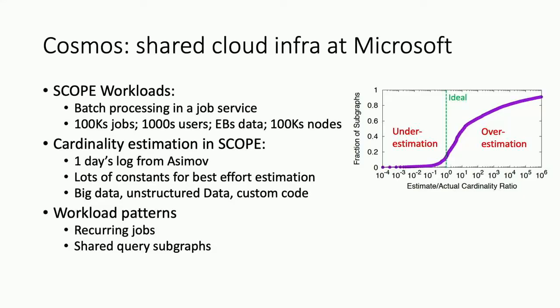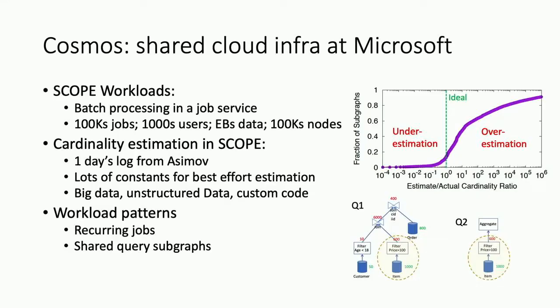It's a hard problem because Scope has big data that's not easy to analyze. The data is unstructured, and there's a lot of custom user code which ends up as black boxes. But we observe that much of the Scope workload is recurring — the same queries appear again and again. They also have lots of shared query sub-expressions or sub-graphs, meaning two queries Q1 and Q2 may scan the same table and apply the same filter. The question is: how can we leverage these common sub-graphs to learn cardinality models?